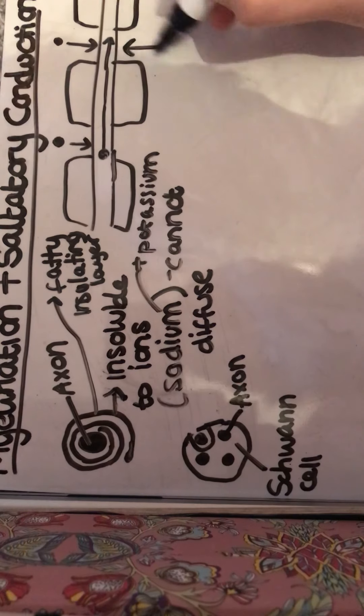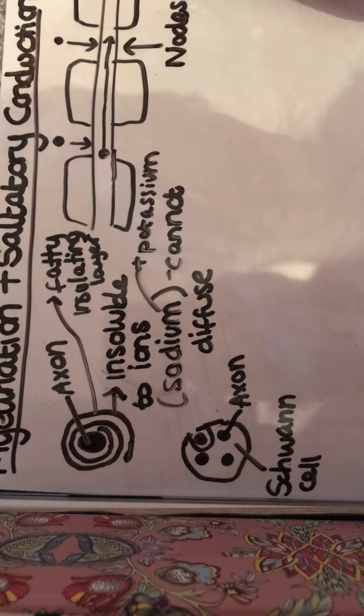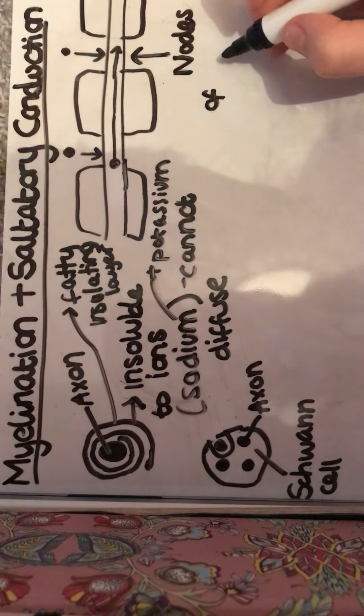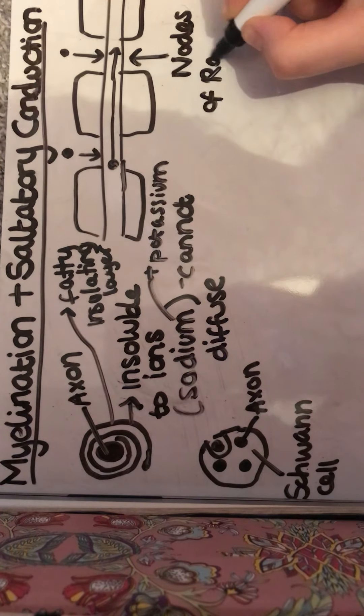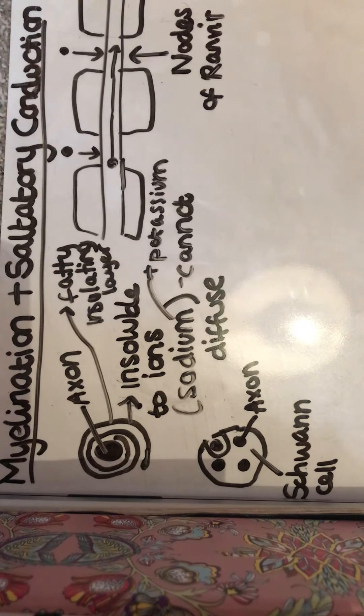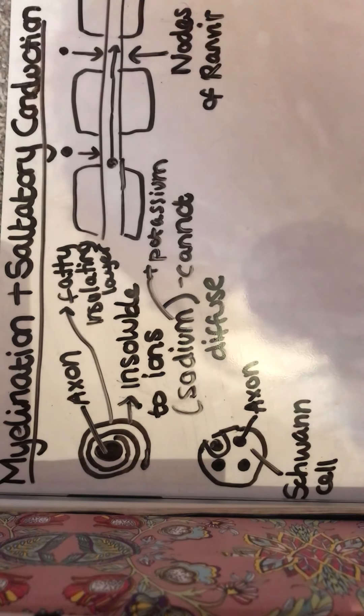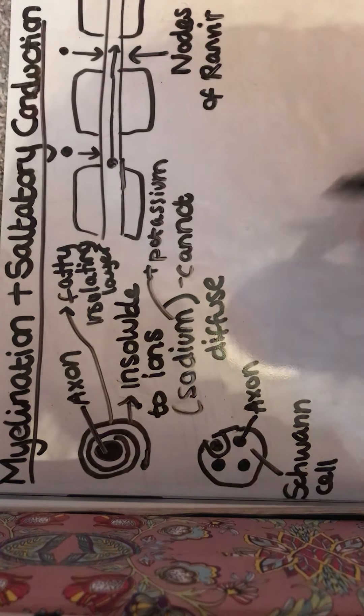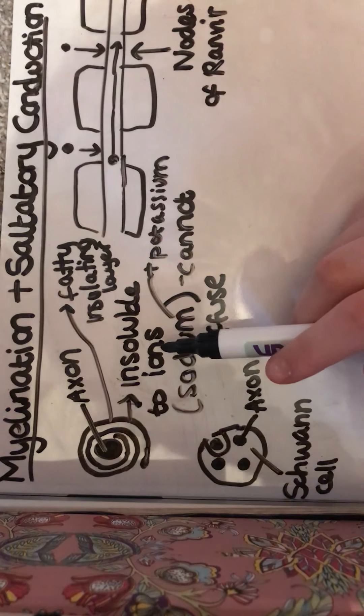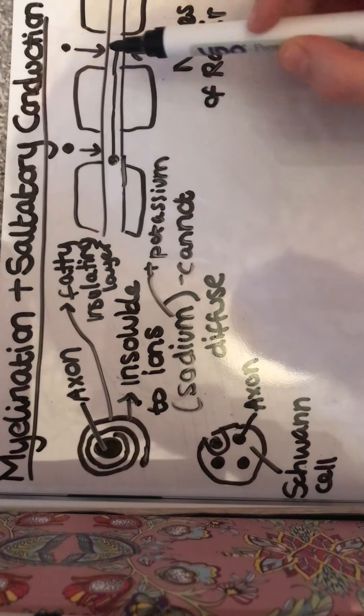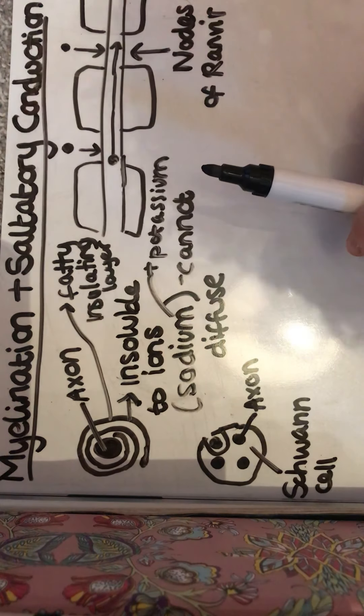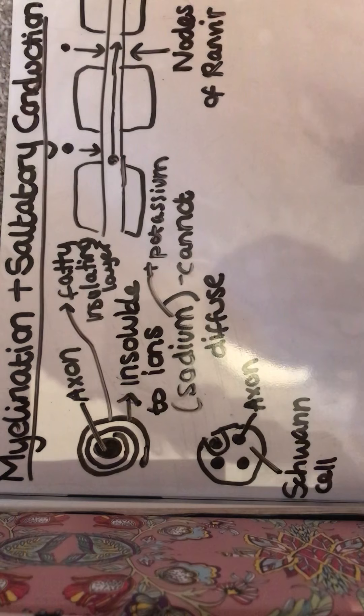So these are the nodes of Ranvier. So in our myelinated neuron we're going to have the impulse jumping from the nodes of Ranvier because that's the only place where the movement can occur.